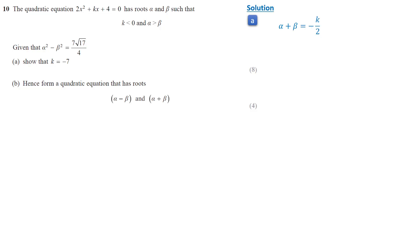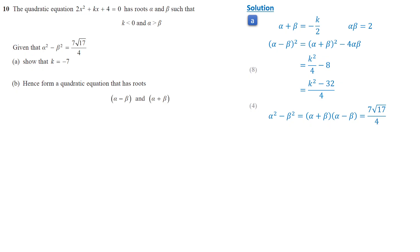In this question, the sum of the roots is negative K over 2, and their product is 2. We need to find (alpha minus beta) squared, which will be used later. Using the identity and substituting values, we know (alpha minus beta)² equals (K² minus 32) over 4. We are also given that alpha squared minus beta squared, which equals (alpha + beta)(alpha − beta), equals 7 root 17 over 4. Squaring both sides, (alpha+beta)²(alpha−beta)² equals 833 over 16. Substituting the corresponding values, we get K² over 4 times (K² minus 32) over 4 equals 833 over 16.